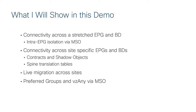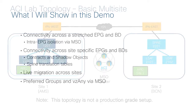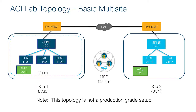Don't worry if you don't know what those terms mean — I'll make that clear when I show you the example. Just like always, I want to remind everybody of the topology I'm using in my lab. Site one is Amsterdam on the left, site two is Barcelona on the right. My inter-site network is up and running and my MSO cluster is fully deployed.